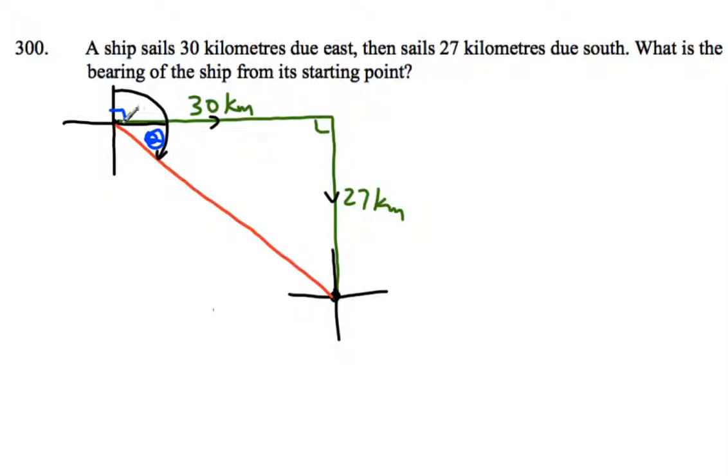What's the bearing of the ship from its starting point? So that's our starting point up here. Maybe S for start there. And so our ship is down here now. We want that bearing here that goes from north all the way around clockwise to the red line. Now, to help us, we want to find that theta that I've drawn in blue there. That's the angle we want to find. If we can find that angle, we could add it to 90 degrees to find the full bearing. So how are we going to find that angle?